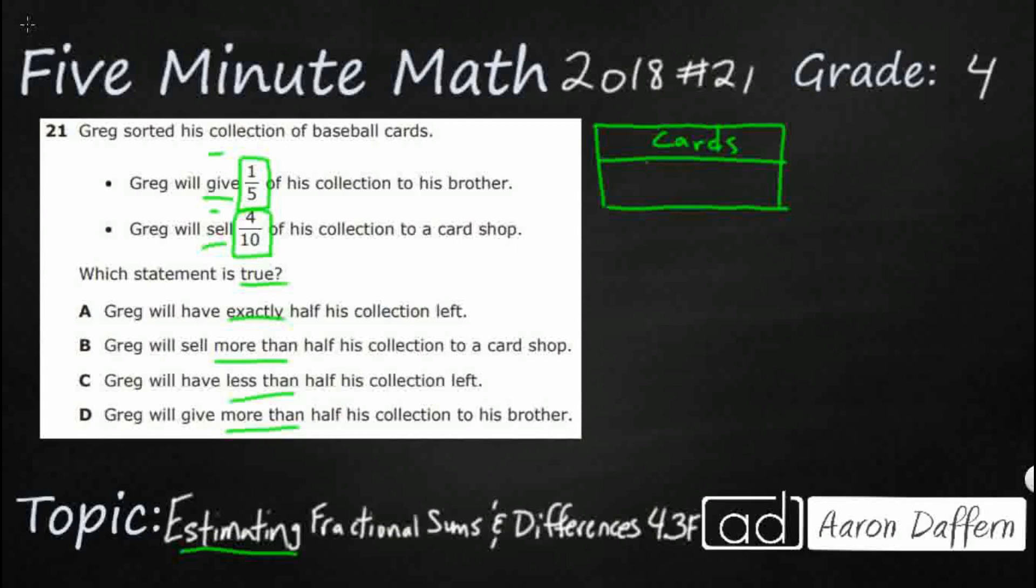He is going to give one-fifth to his brother. I will put a B right there. He is going to sell four-tenths that is going to go to the card shop, that is a C.